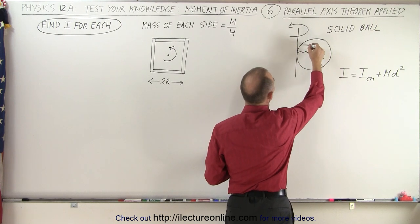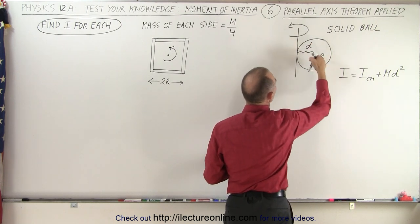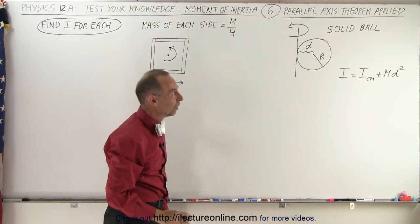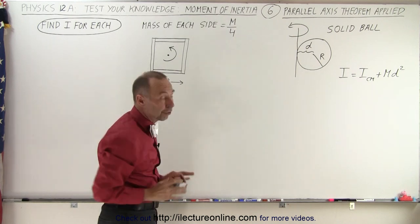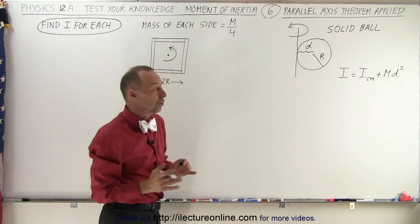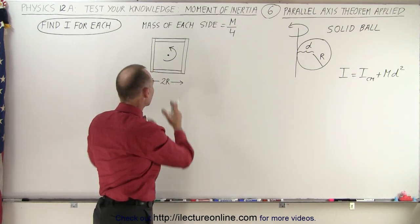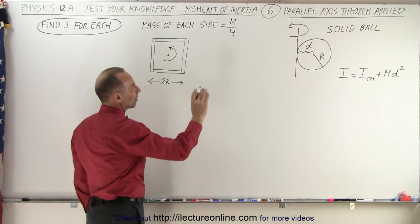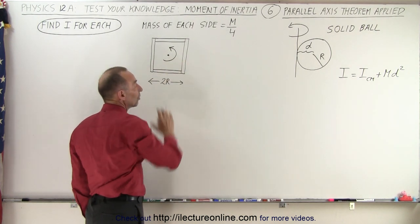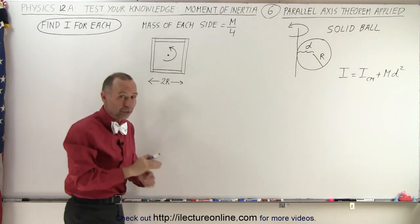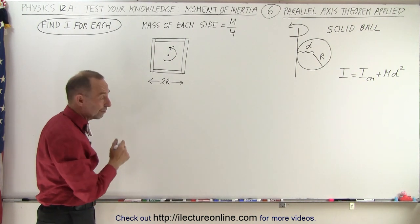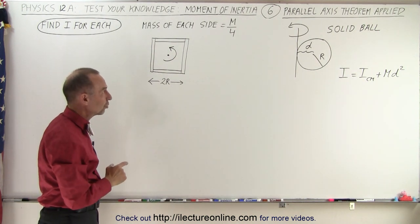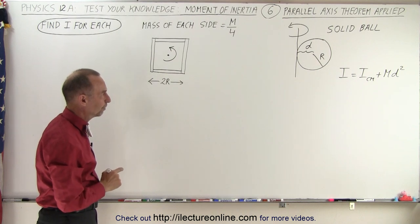then d would be equal to the radius of that solid ball — that's the distance to the point about which it's going to be rotating. We're going to start with that one first, that's the easier one, and then we're going to solve this one here. If you don't use the parallel axis theorem on this particular example and you try to do it by integration, you're going to find that that is very difficult to do, but much easier using the parallel axis theorem.